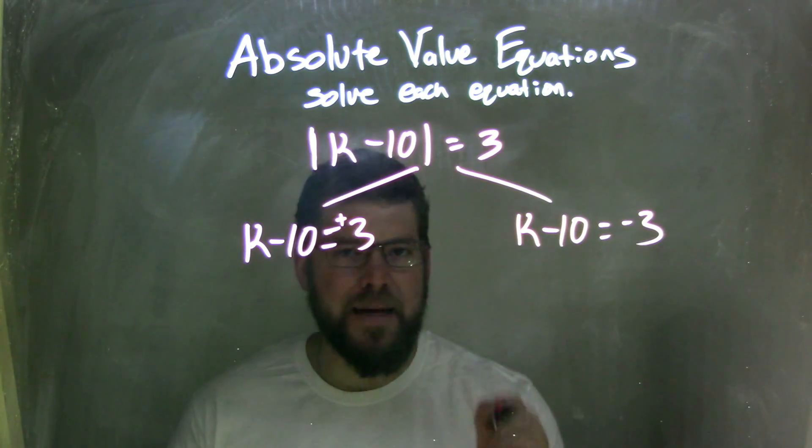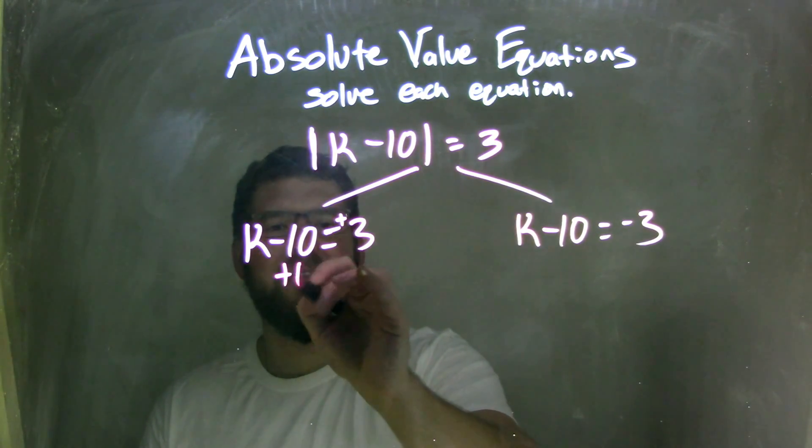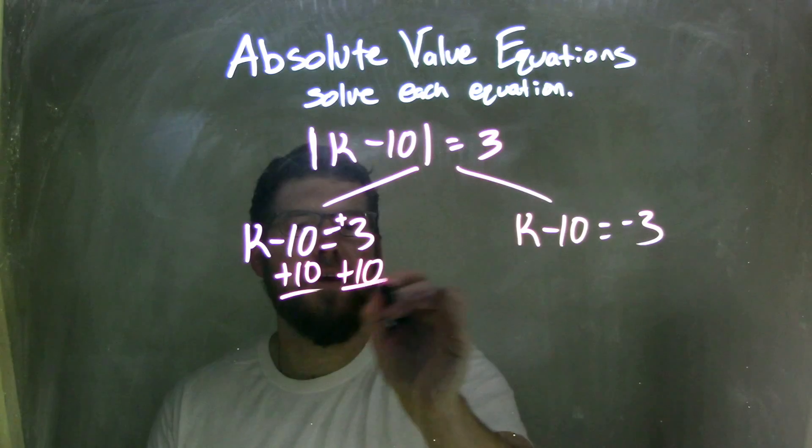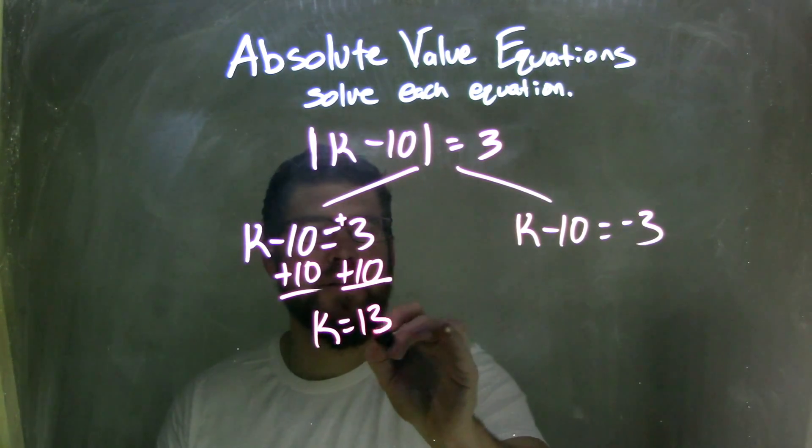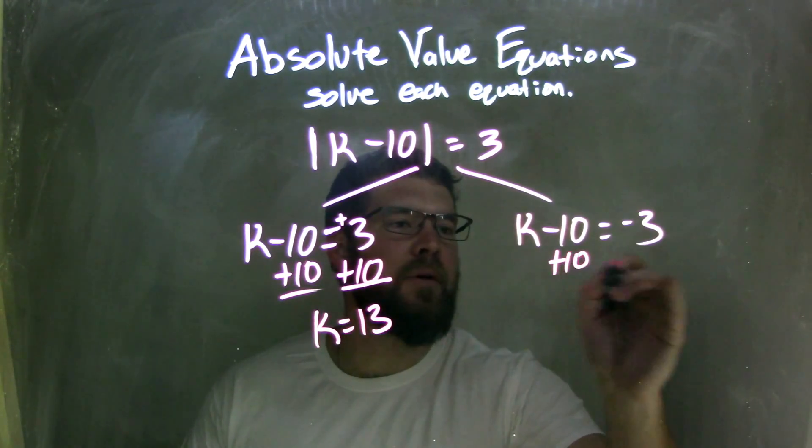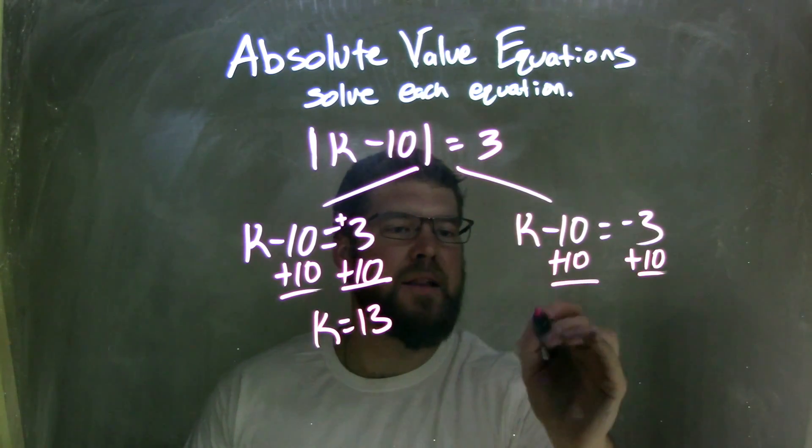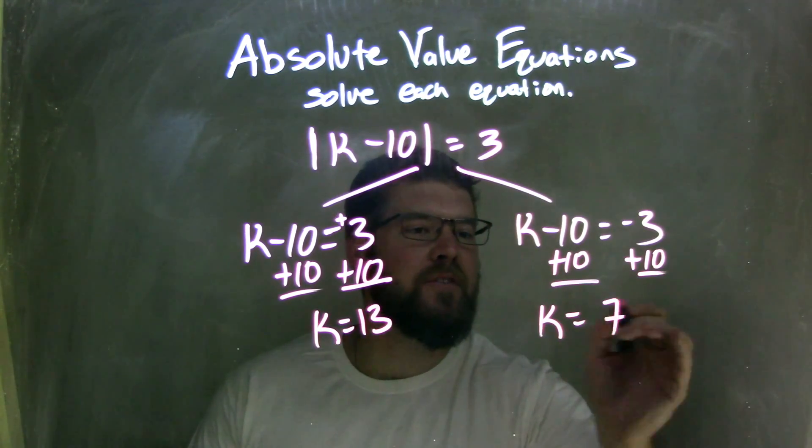Now I'm going to solve each equation individually. I'm going to add a 10 to both sides, leaving me with k equals a positive 13. And I'm going to add a 10 to both sides here, leaving me with k equals a positive 7.